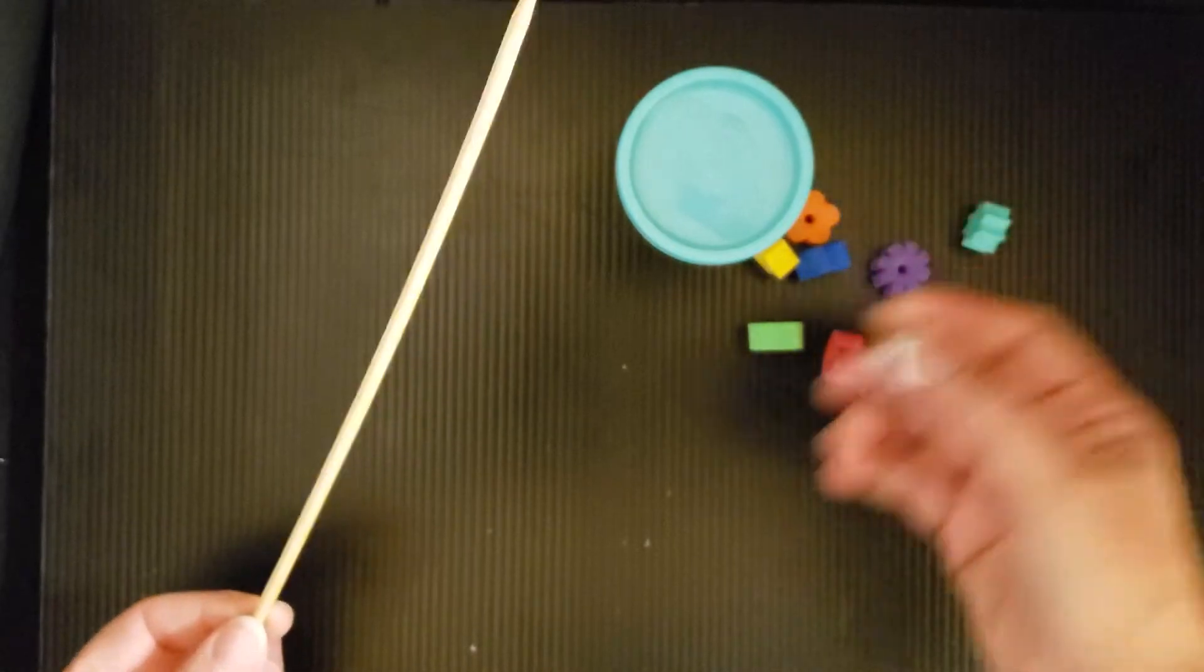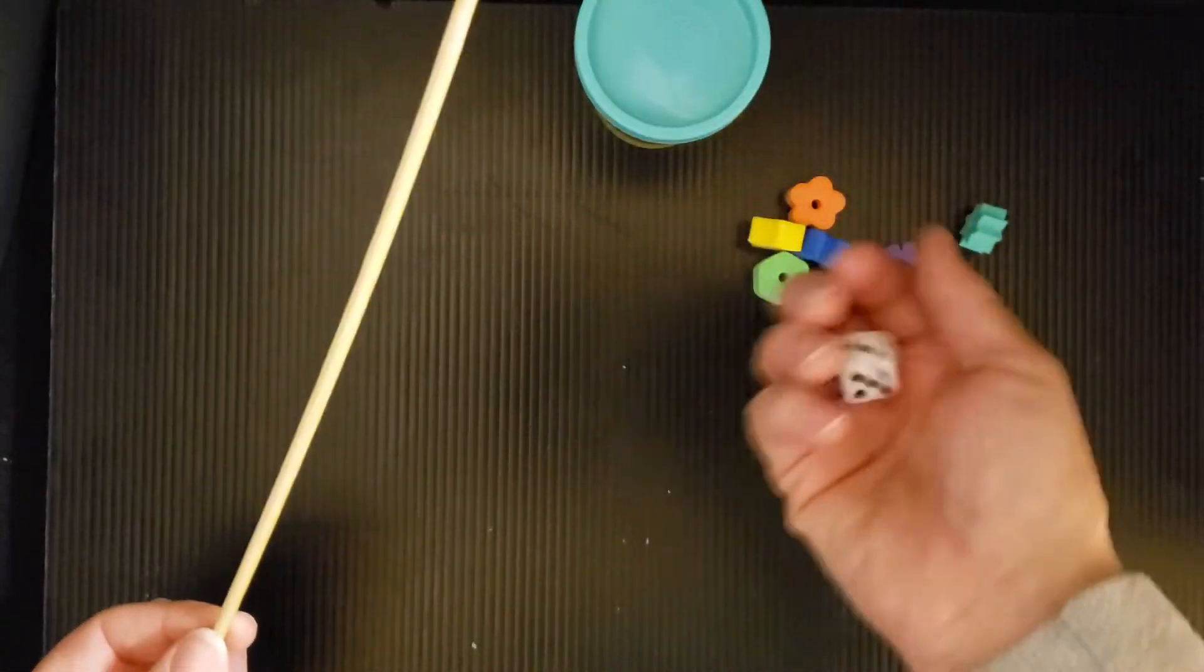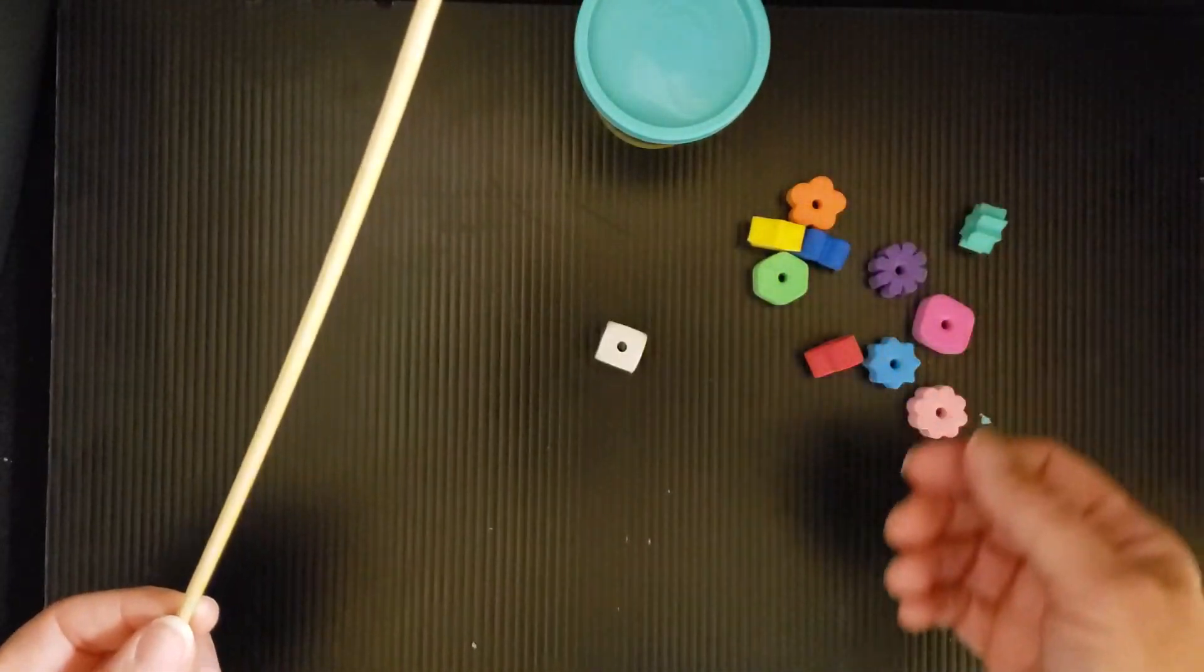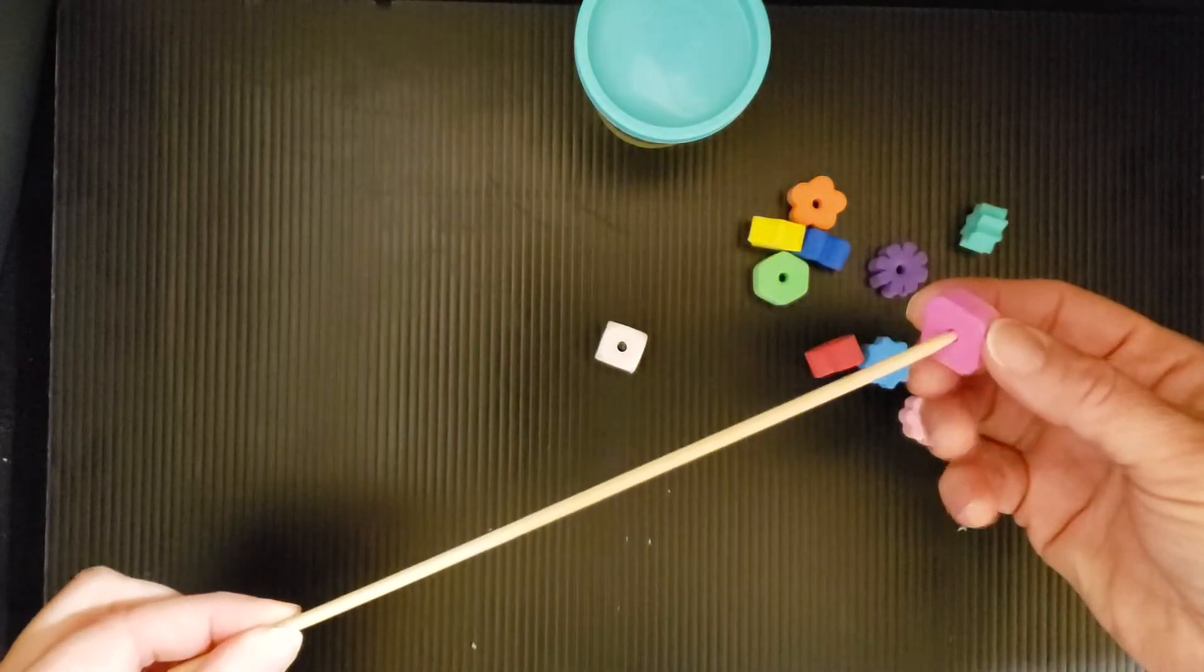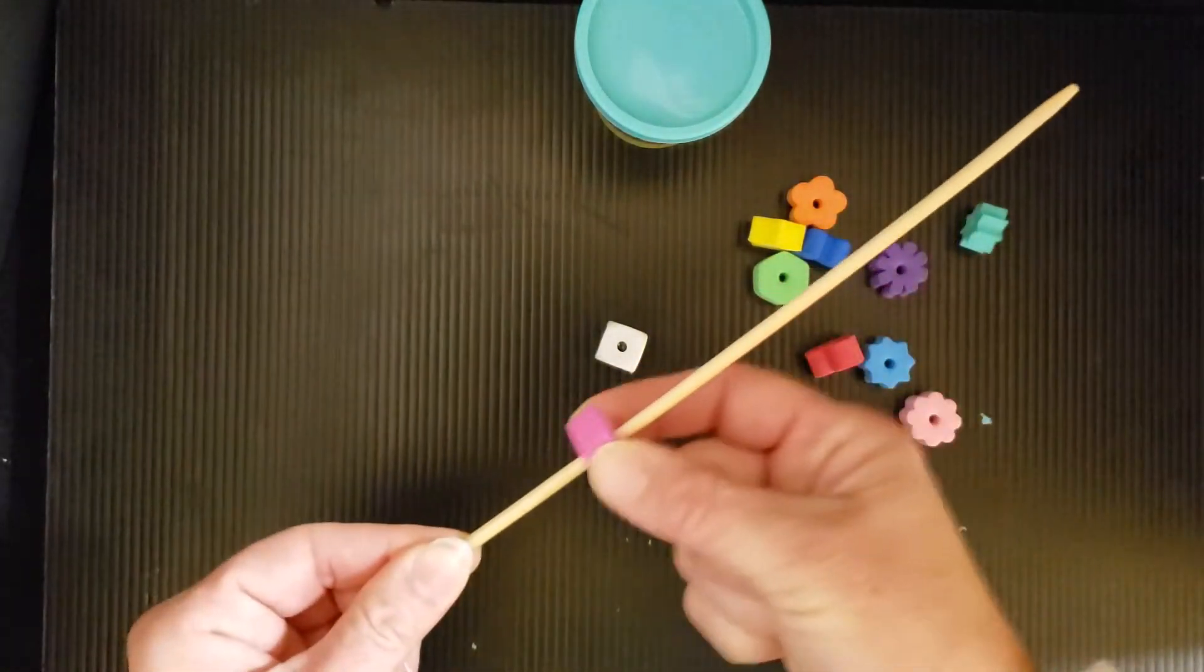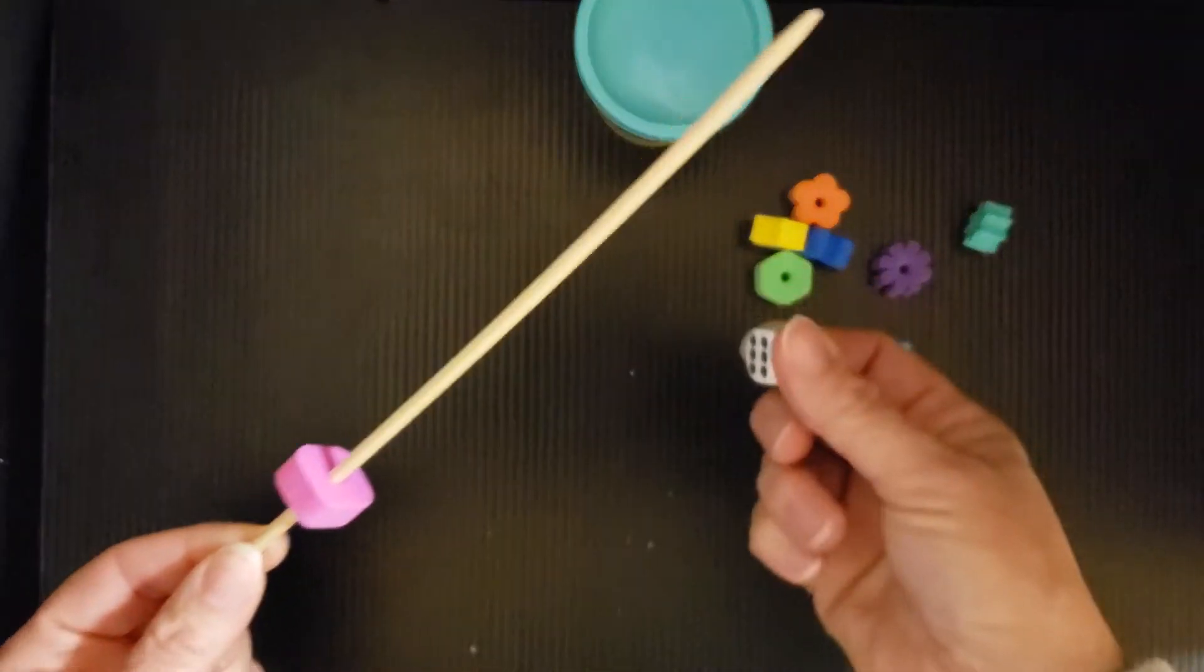And then we're going to roll our dice, count the number, and put that number of shapes on our craft stick. I got a one, so I pick one. Pinch and push and repeat.